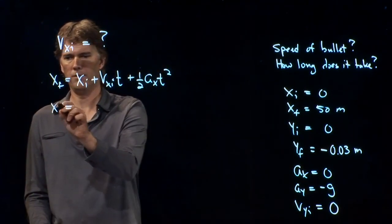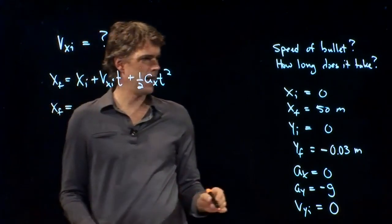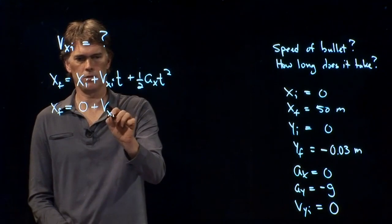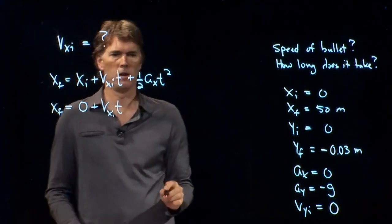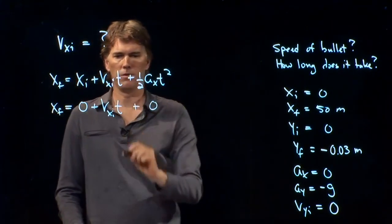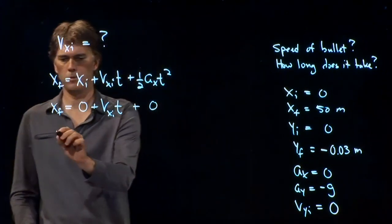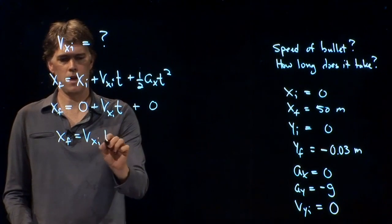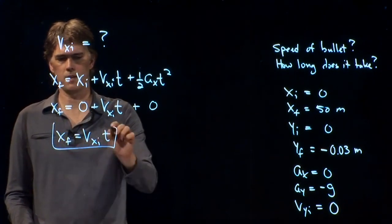We know x final. We know x initial is zero. V_x initial is what we're looking for. We know that a_x is zero, and so we get a nice little equation here: x_f = v_xi*t.